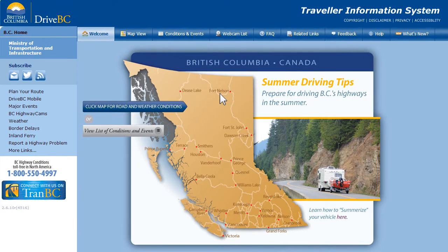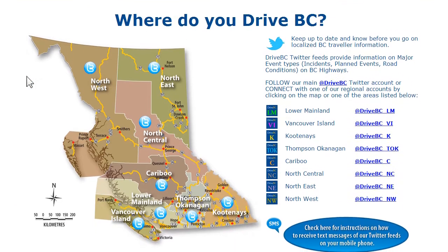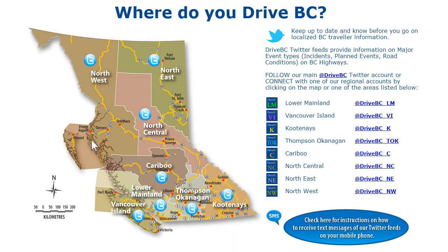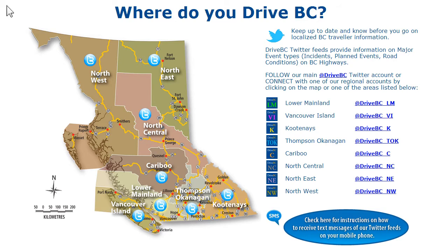On Twitter, or do you want to receive text message alerts directly on your mobile phone? Click the Twitter icon on the homepage. For example, let's say you live in the Lower Mainland — click your region on the map or on the list of regional Twitter accounts to follow your local DriveBC Twitter feed. You'll find instructions for setting up text message alerts by following the blue button below the list.